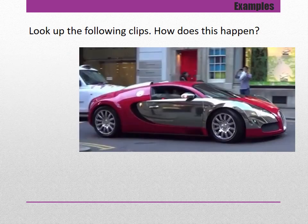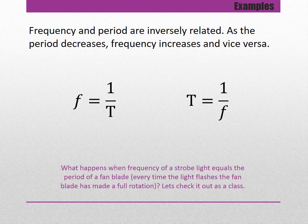In the case of the Bugatti, the tires appear to be moving backwards because the camera takes a picture of the wheel just before it reaches its original position again. Since frequency equals cycles divided by time and period equals time divided by cycles, frequency and period are inversely related — as the period decreases, frequency increases and vice versa. If given frequency you can find period, and if given period you can find frequency.